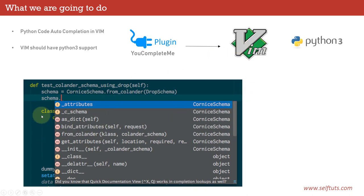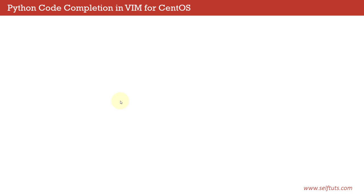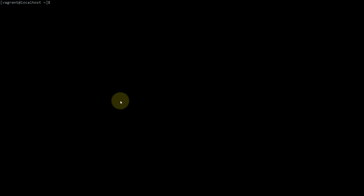This is what we'll get after following this tutorial: if you have a schema written and you put a dot, it gives all the methods and properties present on that particular variable — you get this type of auto completion in Vim, which is awesome. We'll install this setup on a CentOS system. You can use your own Linux system, MacBook, or Ubuntu system — the steps will be same, though commands will differ per distro. I'm explaining it for CentOS 7.